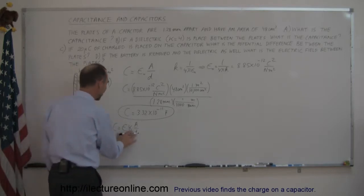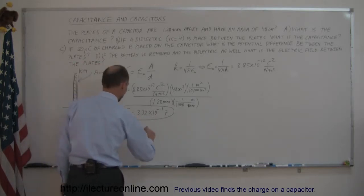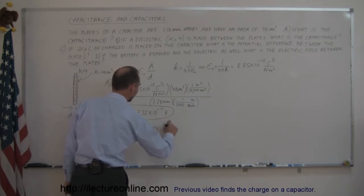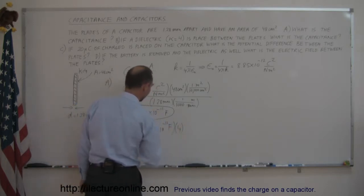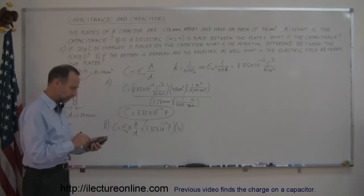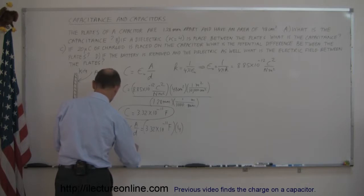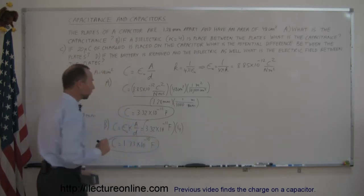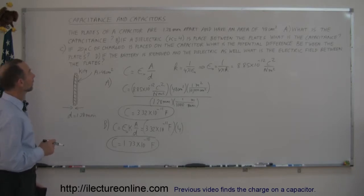The new capacitance is the same number simply multiplied by the constant K. So it equals 3.32 times 10 to the minus 11 farads multiplied by the dielectric constant 4. That means the capacitance has changed to 1.33 times 10 to the minus 10 farads — we've increased the capacitance fourfold by placing a dielectric inside.